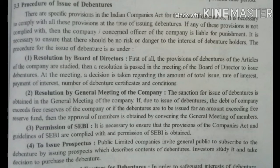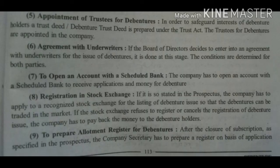SEBI stands for Securities and Exchange Board of India. Fourth is to issue a prospectus: a public limited company invites the general public to subscribe to debentures by issuing a prospectus which describes the content of the debenture; investors study it and take a decision to purchase. Fifth is appointment of trustees: in order to safeguard the interest of debenture holders, a debenture trust deed is prepared under the Trust Act and trustees for debentures are appointed. Sixth is agreement with underwriters: if the board of directors decides to enter into an agreement with underwriters for the issue of debenture, the conditions are determined for both parties.